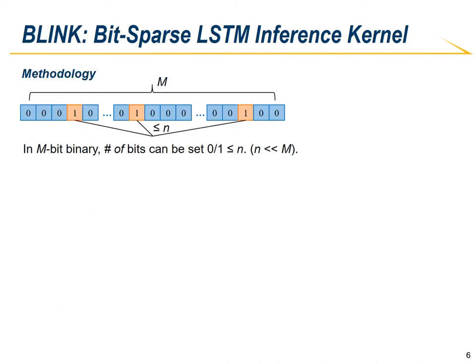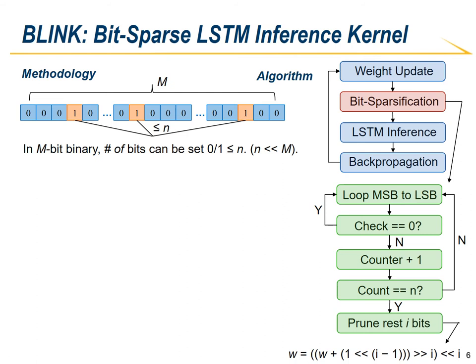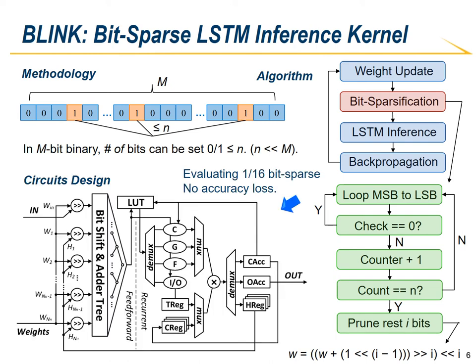In addition, we proposed BLINK, short for BitSparse LSTM Inference Kernel, to further increase the energy efficiency of LSTM inference. For an n-over-m bit-sparse data representation, the value is represented in an m-bit binary code in which only n bits can be freely set to 0 or 1, whereas the rest of the bits must remain 0. Since n is much smaller than m, it is called bit-sparse. We introduce the bit sparsification algorithm and embed it into LSTM training to perform bit-sparse quantization for LSTM inference. Our evaluation shows there is no accuracy loss when adopting the 1-over-16 bit-sparse data format for LSTM inference.